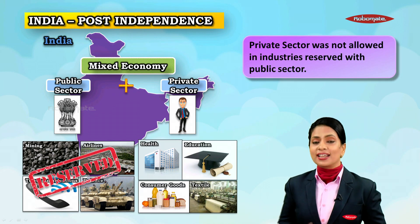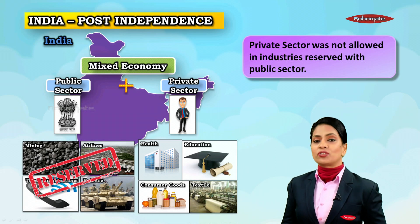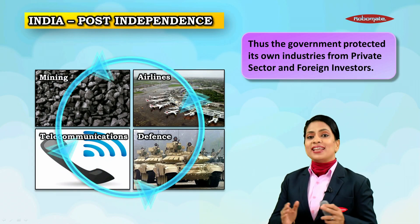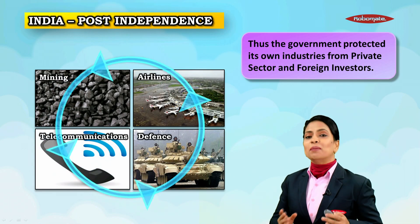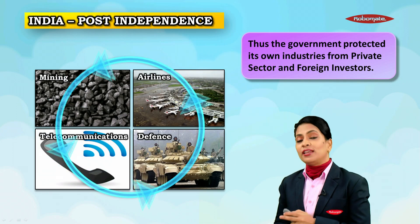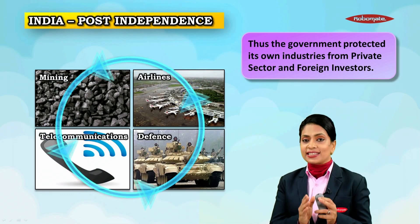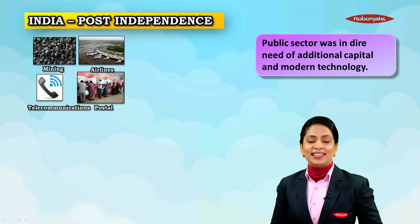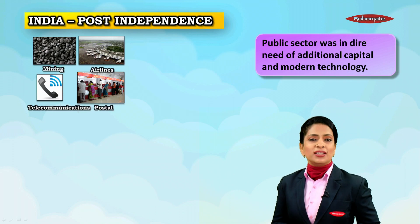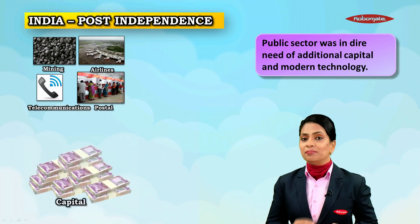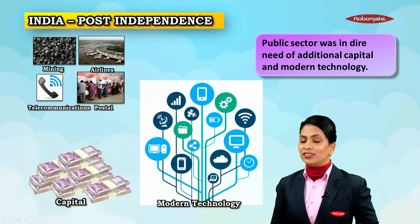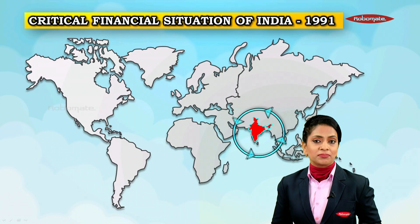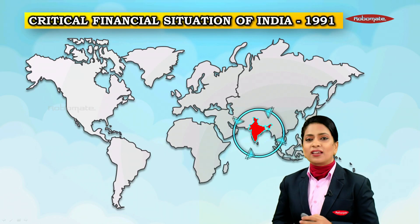The other industries were controlled by the private sector. The private sector was not allowed into industries reserved for the public sector. The government also protected its own industries from private sector and foreign investment, feeling that these were more profit-motivated than welfare-oriented. Meanwhile, the public sector was in dire need of additional capital as well as modern technology, and most public sector companies needed to increase their profit margins.